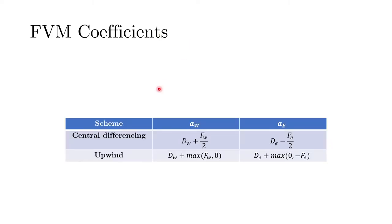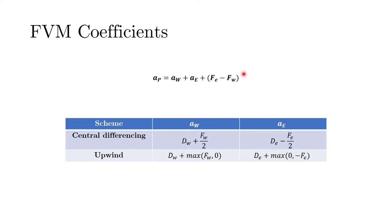Let us recap by looking at the finite volume coefficients for the two schemes. For central differencing and the upwind scheme, we can use this table to understand the coefficients for the neighboring points — the west and east grid points. In central differencing, the coefficient was of the form D plus or minus F over 2, whereas in the upwind scheme it used the maximum function. The main coefficient A_P was given as the sum of neighboring coefficients plus the divergence of velocity, which is usually zero.